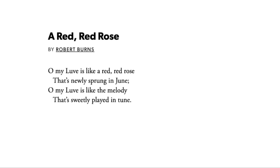There are lots of metaphors in poetry, of course. This is Robert Burns: 'My love is like a red, red rose. My love is like a melody.' So here's our x equals y — his lover is like a rose. He says it's newly sprung in June, so he's thinking about his lover as fresh, young, and beautiful.